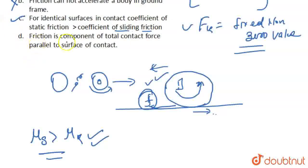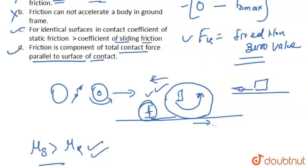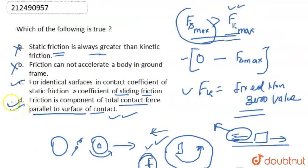The fourth option is: friction is a component of the total contact force parallel to the surface of contact. Yes, this is the correct option, because friction force acts parallel to the surface of contact, and friction force is also a component of the contact force. So this is correct. Among the four options, only C and D are the correct options.